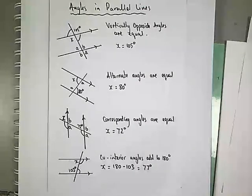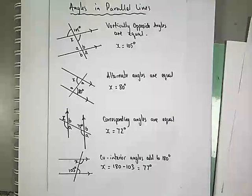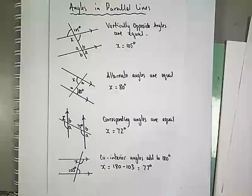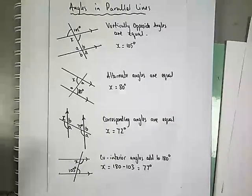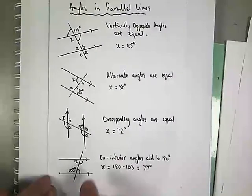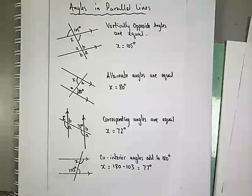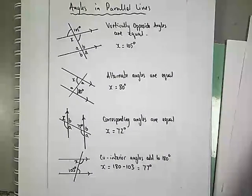We're going to need to remember these four rules, which will help us as we get closer to our GCSEs in Year 11. To recap: vertically opposite angles are equal; alternate angles are equal; corresponding angles are equal; and co-interior angles — on the inside of parallel lines — add up to 180 degrees. Have a good worksheet and I'll speak to you guys soon — have a great day!